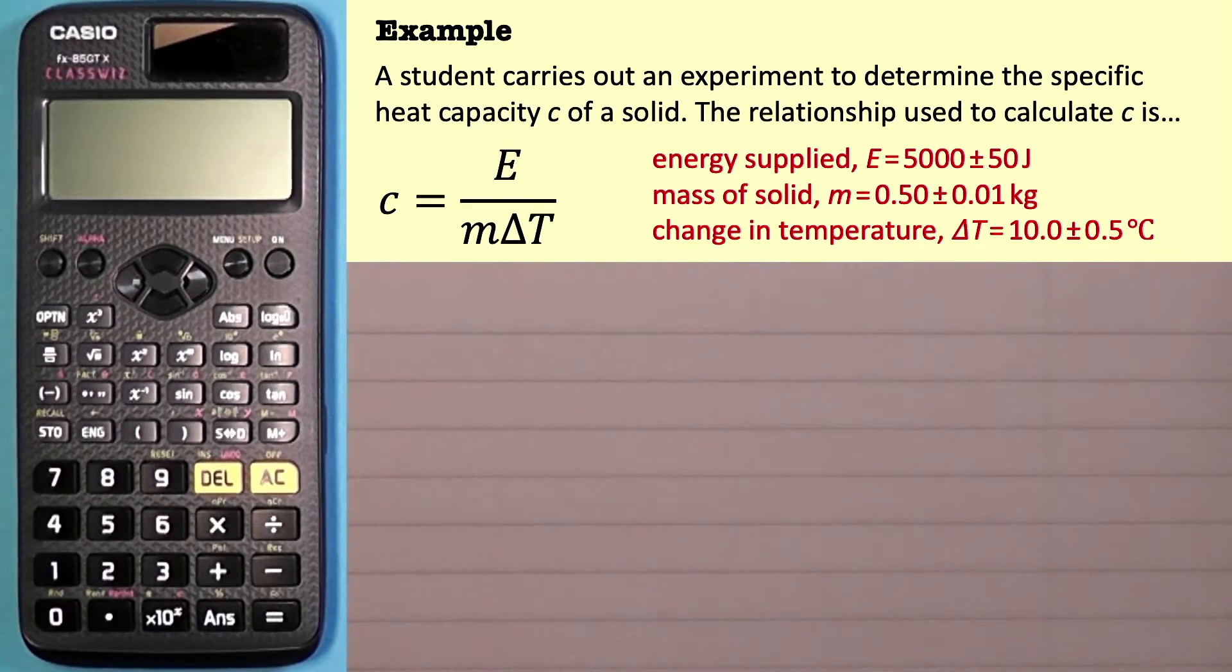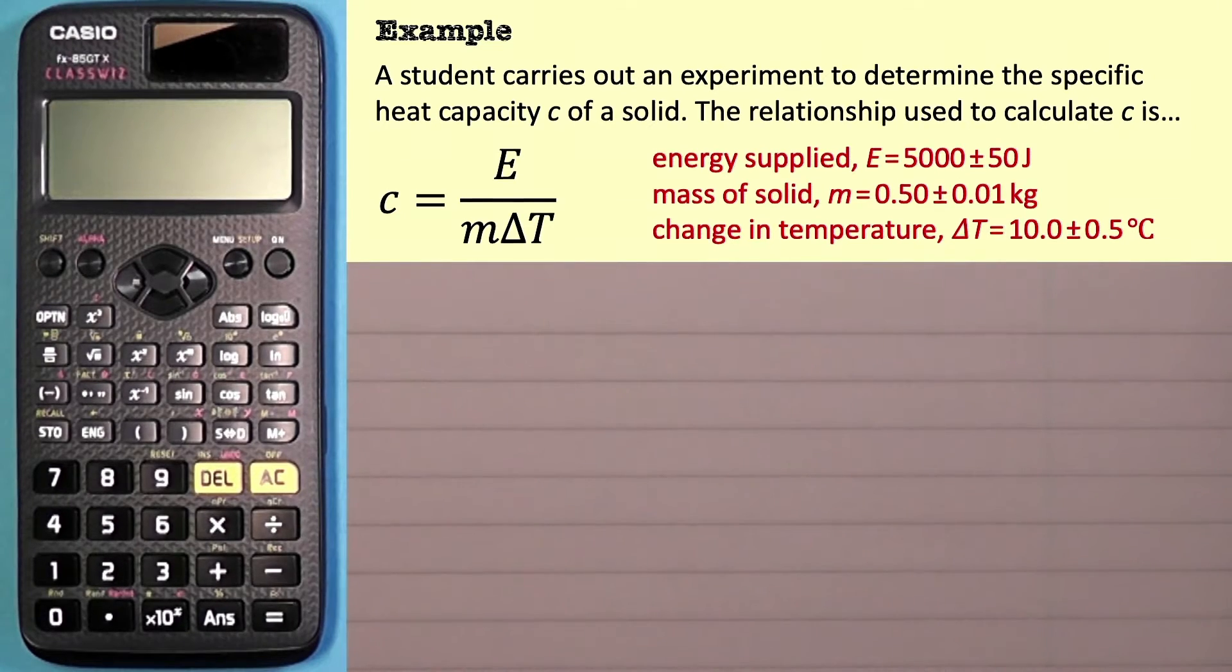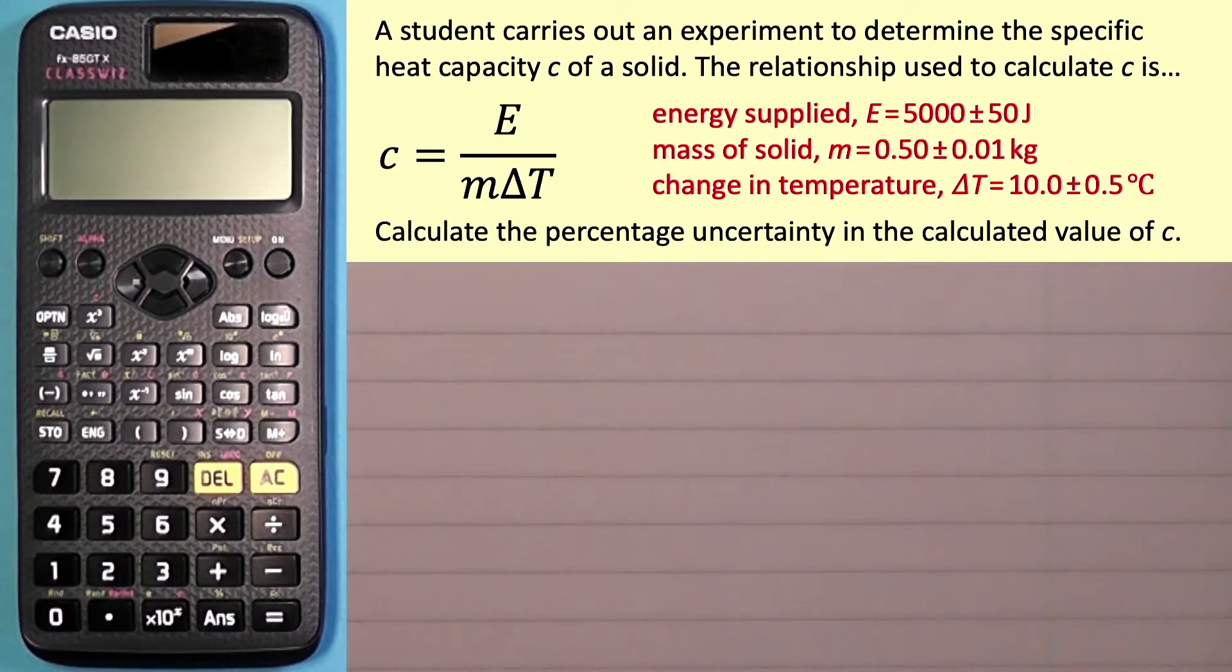This is a question based on the 2018 paper. I've changed the numbers just to make things a little bit easier. The question asks: calculate the percentage uncertainty in the calculated value of C.